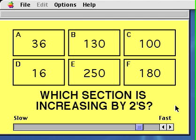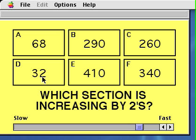The object of this game is to find out which of these six sections is increasing by the number shown here in the bottom. Is it A, B, C, D, E, or F?